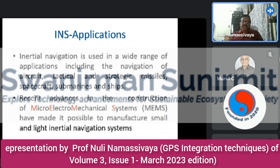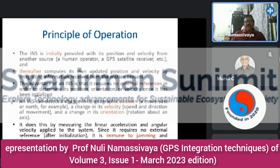Recent advancements in MEMS — Microelectromechanical Systems — have made it possible to manufacture small and light Inertial Navigation Systems. The INS is initially provided with its position and velocity from another source, and thereafter computes its own updated position and velocity by integrating information received from the motion sensors. The advantage of INS is that it requires no external references to determine position, orientation, or velocity once it has been initialized.